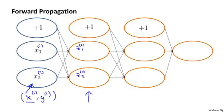And then we apply the sigmoid, or the logistic function, and the sigmoid activation function applied to the z value gives us these activation values. So that gives us a21 and a22.